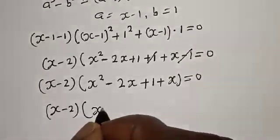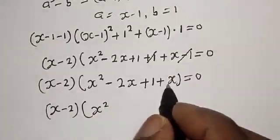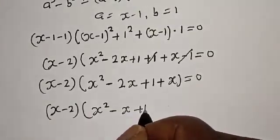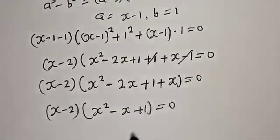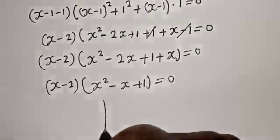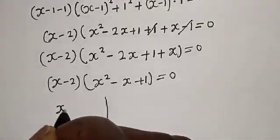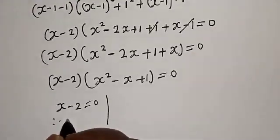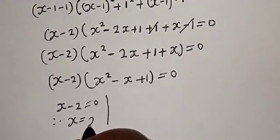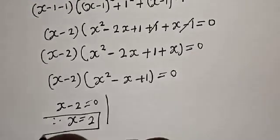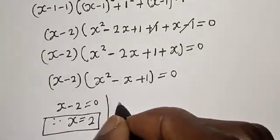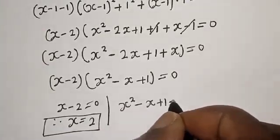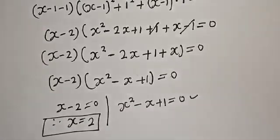Simplifying inside the bracket: s² minus 2s plus s minus 1 plus s plus 1 gives s² minus s plus 1, equal to 0. There are two cases. The first case is s minus 2 equals 0, therefore s equals 2. The second case is s² minus s plus 1 equals 0, which is a quadratic equation.